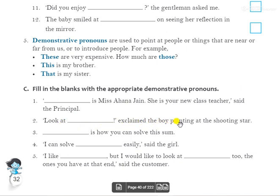Second: 'Look at dash!' exclaimed the boy, pointing at the shooting star. A shooting star is singular and far away, so the answer is 'that'. 'Look at that!' exclaimed the boy pointing at the shooting star.